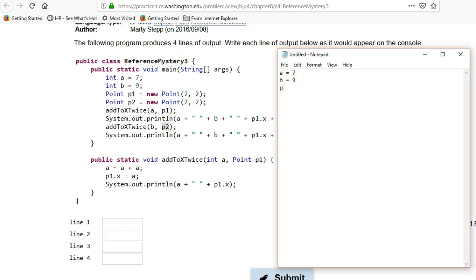Alright, but now let's get into p1 equals a new point, and it's gonna have 2, 2. And p2 is a new point, and that's gonna have 2, 2. So now we're gonna call add to twice.